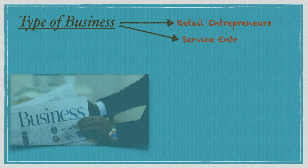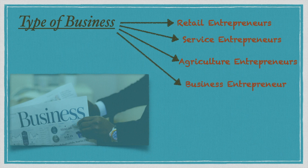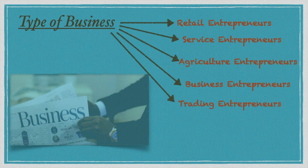Service entrepreneurs give service to people — services like security services, hospitality services, medical personnel services, any product services. Agricultural entrepreneurs involve buying and selling agricultural products, equipment, and agro-based industries. Business entrepreneurs have an idea, start a business, run it and grow it. Trading entrepreneurs undertake trading activities and are not concerned with manufacturing at all — only buying products and selling them.